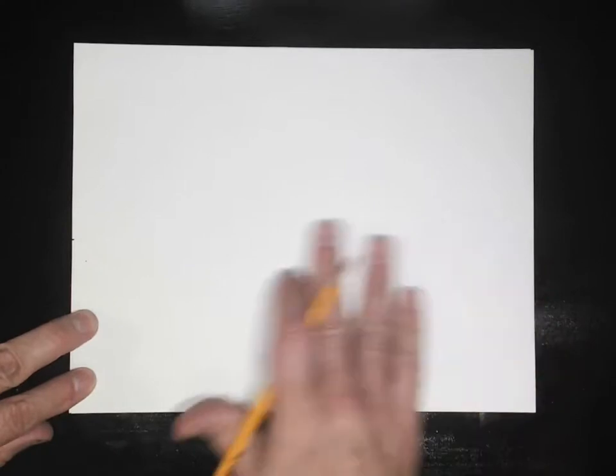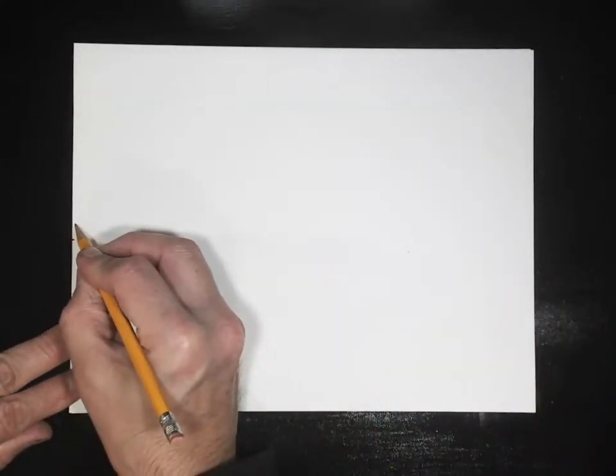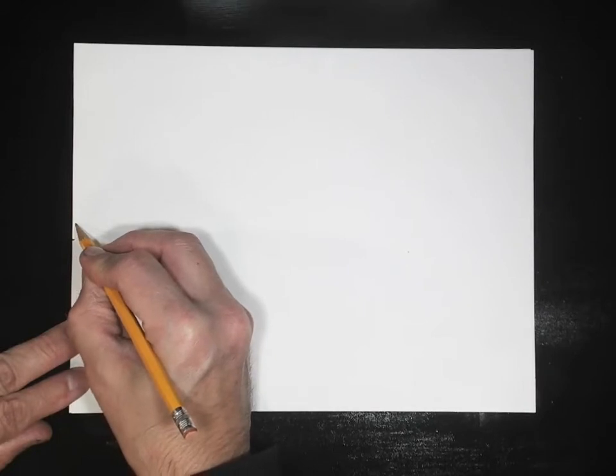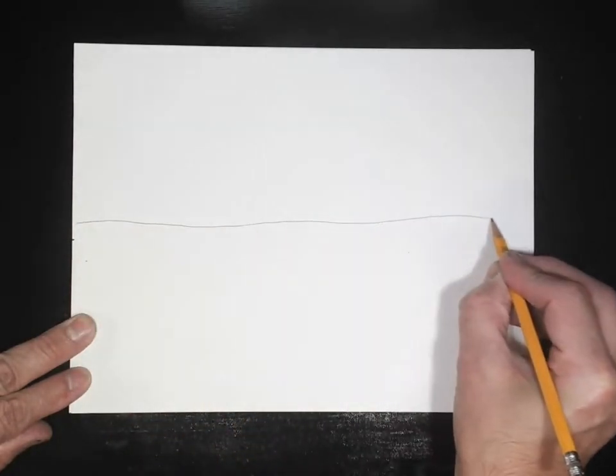So we're going to start today with our paper horizontal, and about halfway up, I want to draw with my pencil, because I want to erase some of it. I want to draw a horizon line that goes across like that.